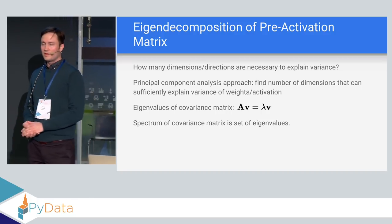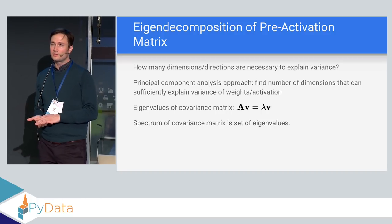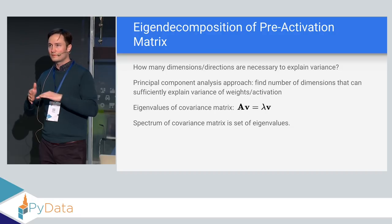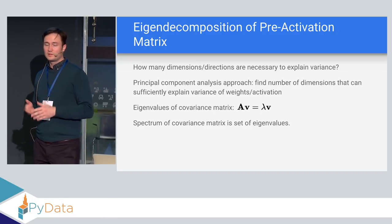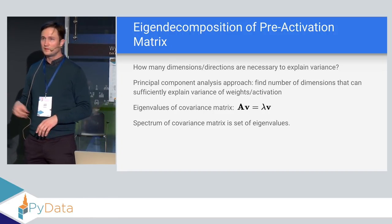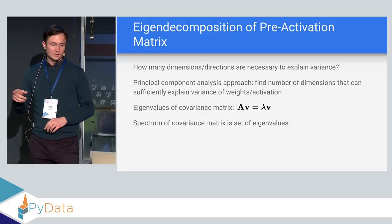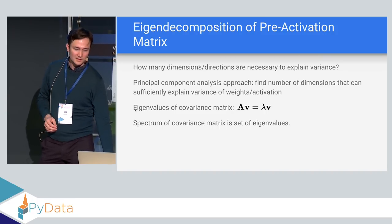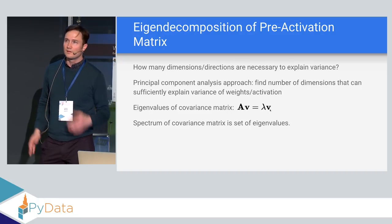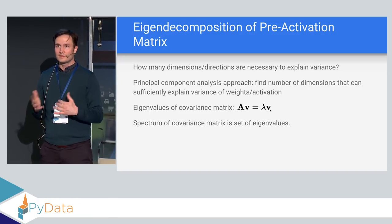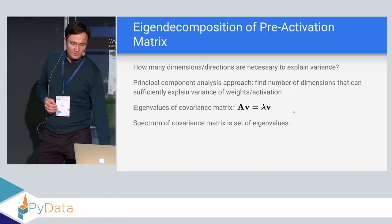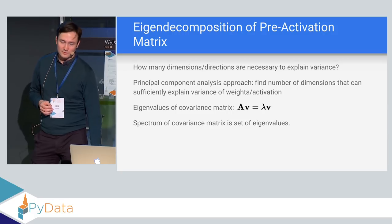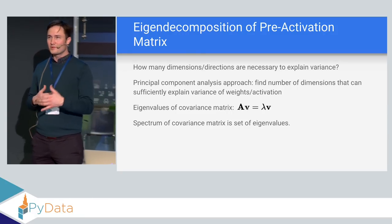The method I applied was eigendecomposition of the pre-activation matrix. With the bottleneck, you take the history of those bottlenecks over time, make a covariance matrix from that, and apply eigendecomposition — using np.cov and np.linalg.eigh in NumPy to get the eigenvectors and eigenvalues. As a reminder: eigenvalues and eigenvectors are the directions necessary to explain all of the variance. Your eigenvalues are scalars that, when multiplied by a vector, give you that matrix times that vector.